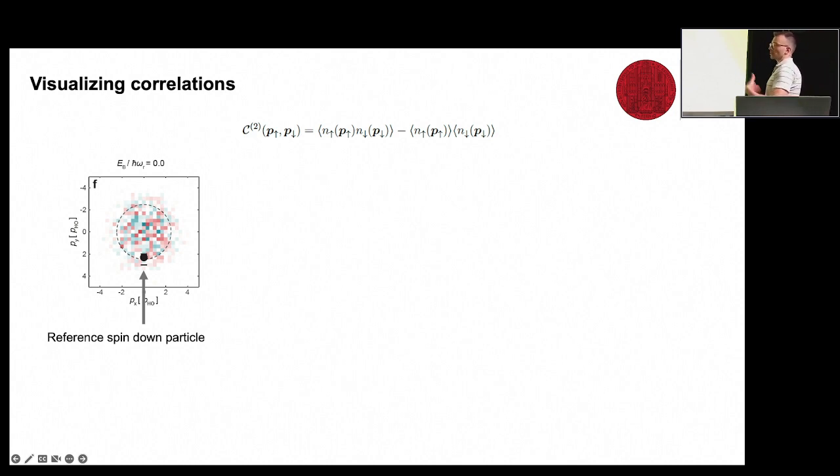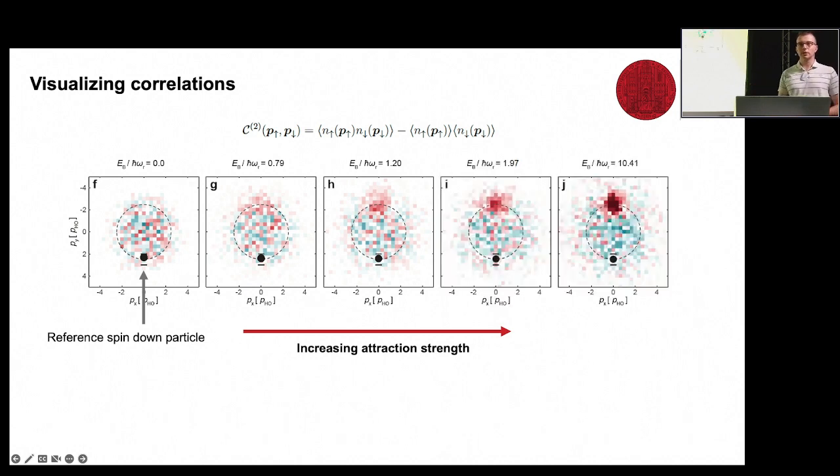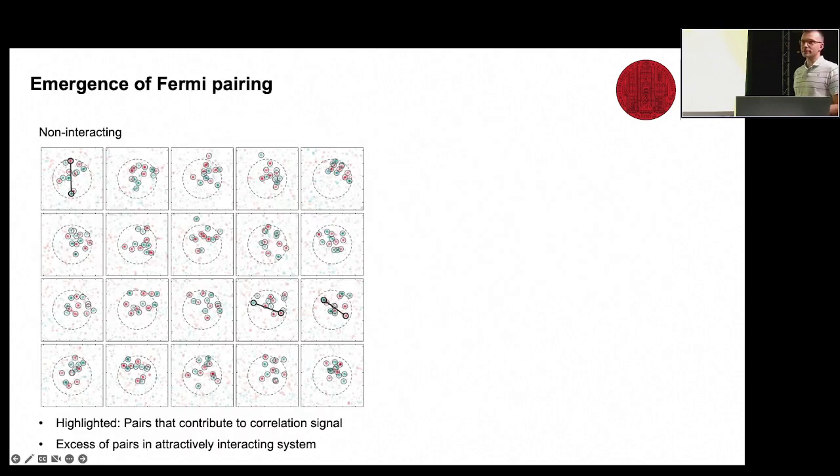We're interested in correlations, so we're interested in the connected part of the density-density correlation function in 2D, so it's a four-dimensional object. To represent this, we're going to fix a reference spin-down particle, so the P down is going to be fixed here, and we're just looking at the connected part of the correlation function as a function of the up-momentum only. What this tells you is the change in the spin-up density that you get if you condition on detecting a spin-down particle here. If we have no interactions, then we see noise, which is what you expect - the spin-up particles just don't care about where this spin-down particle sits. If we dial in stronger and stronger attractive interactions, you do see some correlation features emerge, and it becomes quite clear in the strongly attractive limit that you see a very strong correlation signal. Correlations are suppressed here because of number conservation, and you have very strong positive correlation on the exactly opposite side of this Fermi surface. This is what you would intuitively expect from BCS theory - that spin-down and spin-up particles like to correlate across the Fermi surface and essentially form zero-momentum pairs.